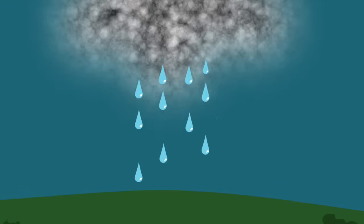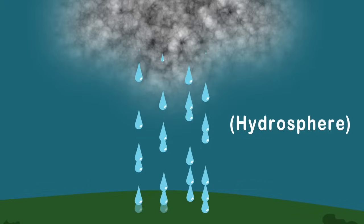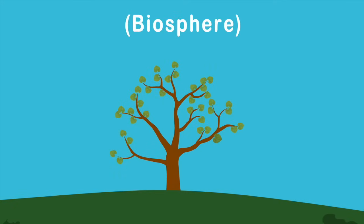When the rain falls to the Earth, this is the hydrosphere, which stimulates plants to grow, which is the biosphere.